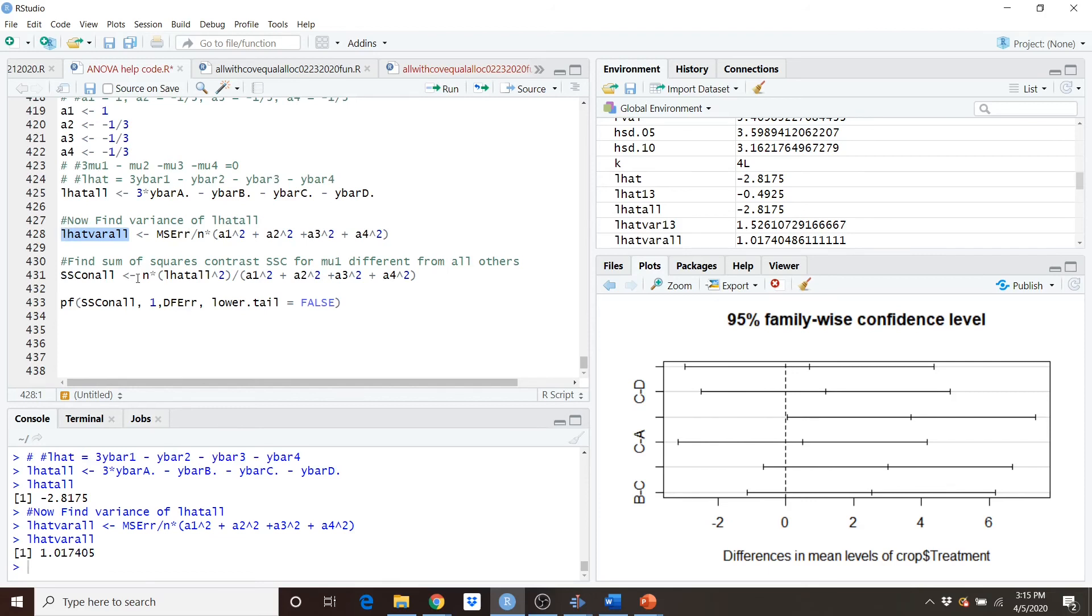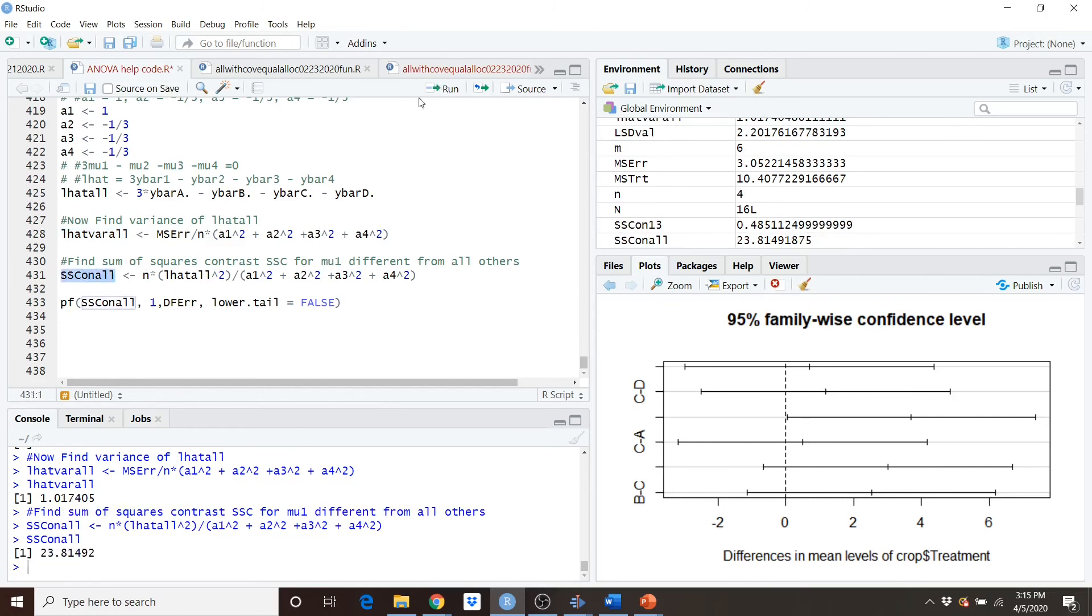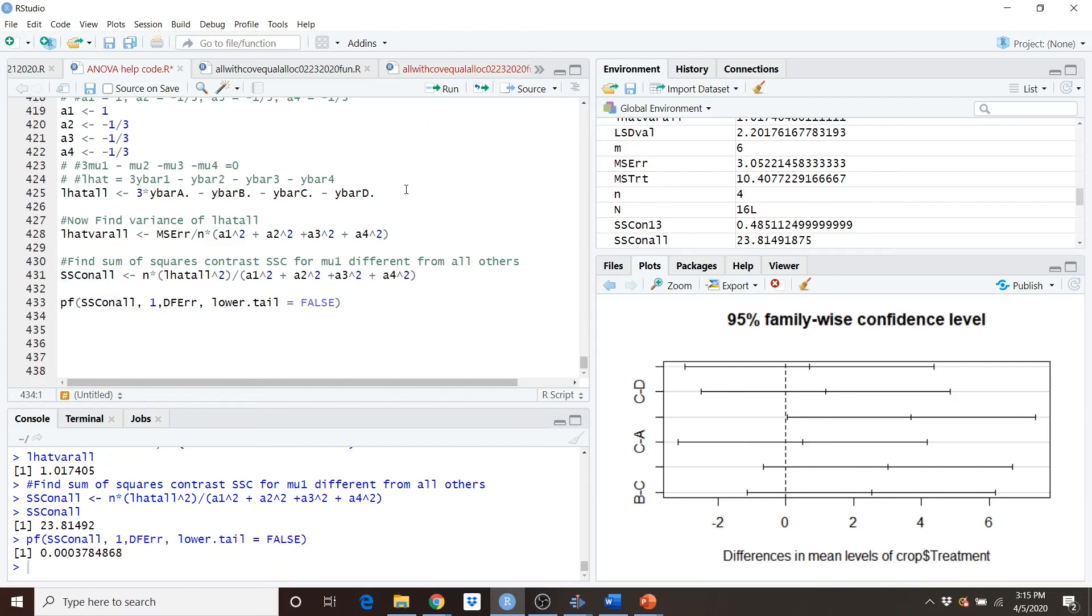Now let's look at our sum of squares contrast for all of these. Sum of squares contrast for all is 23.81492 and if I look at the probability of an f greater than what I would expect with 1 and 12 degrees of freedom I see that I get a p value of 0.003784868 which is significant. This would tell us that this is significant. And so what this tells us is that mu1 is different from all others.